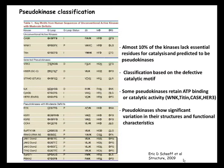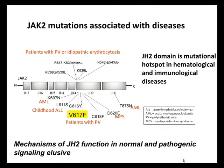Recent studies of pseudokinases have clearly shown significant variation in the structures and functional characteristics of these proteins. The JAK2 JH2 domain is of major interest for several reasons. One of the most important came out in 2005 when four labs independently identified a single somatic mutation in the JH2 domain, valine-617-to-phenylalanine, which is a cause for the most common myeloproliferative neoplasms: polycythemia vera (PV), essential thrombocythemia (ET), and myelofibrosis (MF).